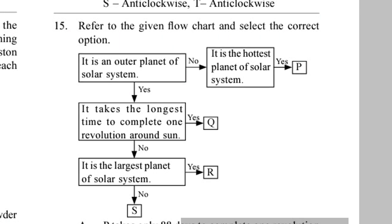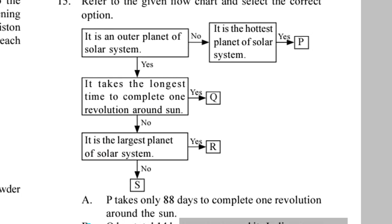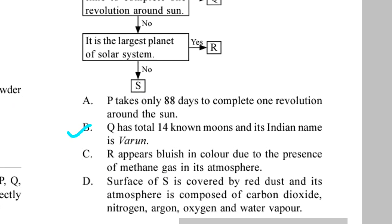Question 15. Refer to the given flow chart and select the correct option. Correct answer is Q has total 14 known moons and its Indian name is Varun.